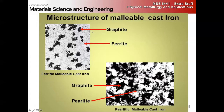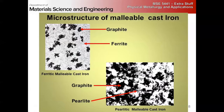The ferritic malleable iron looks similar to nodular iron — the nodules are not nearly as spherical as they are in ductile iron, but otherwise they're pretty similar in terms of properties and structure. The pearlitic form has a mix of graphite, pearlite, and some plain ferrite. That's the general nomenclature on cast irons — you're not likely to ever work with these, but it's useful to know the general classes.